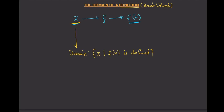Let's give an example. Say our function is f(x) = x + 1. What is the domain of this function? If we try to plug in any value for x, it will give us a real number output, because if you add one to any real number, you always get a real number. So for that reason, the domain will be the set of all real numbers.